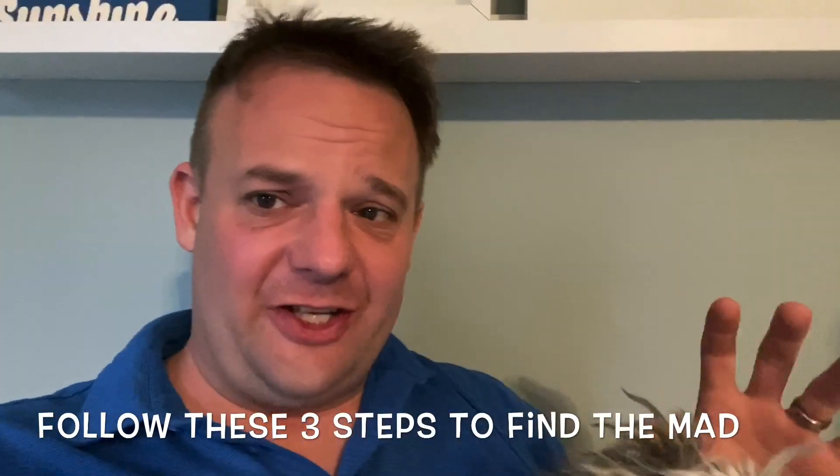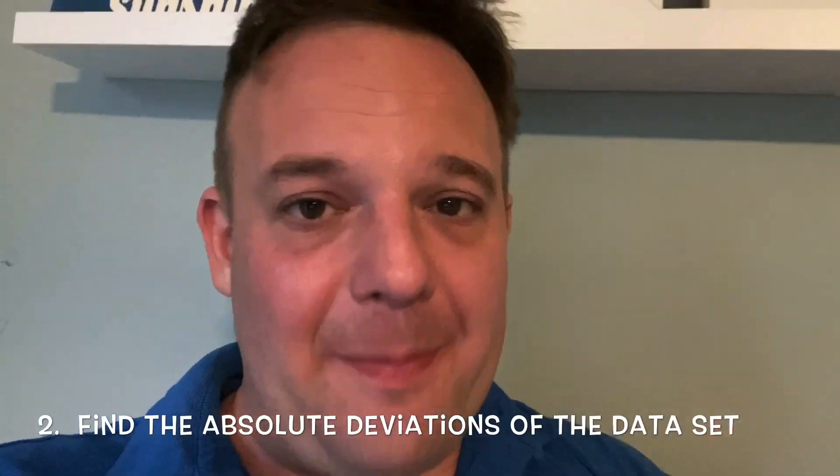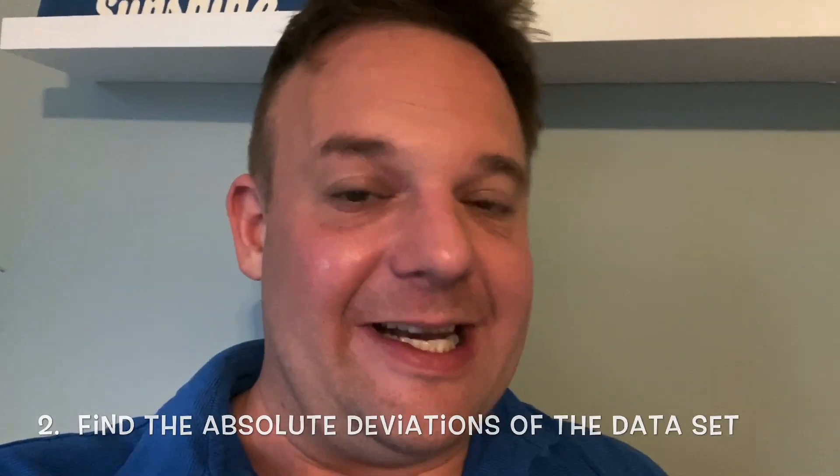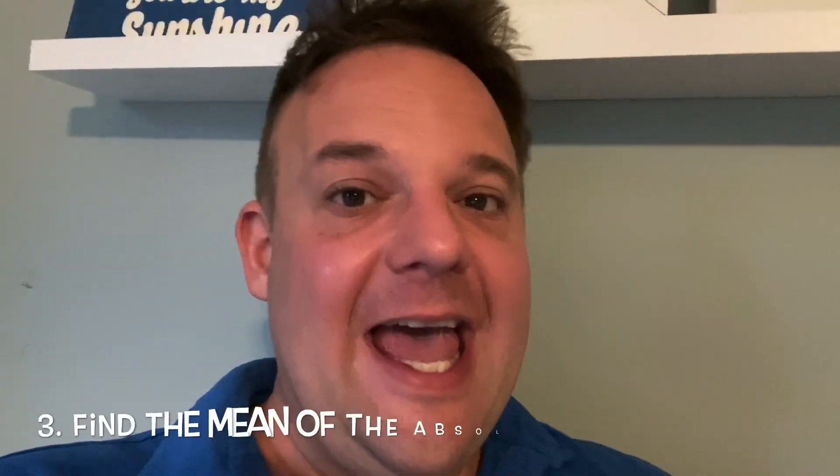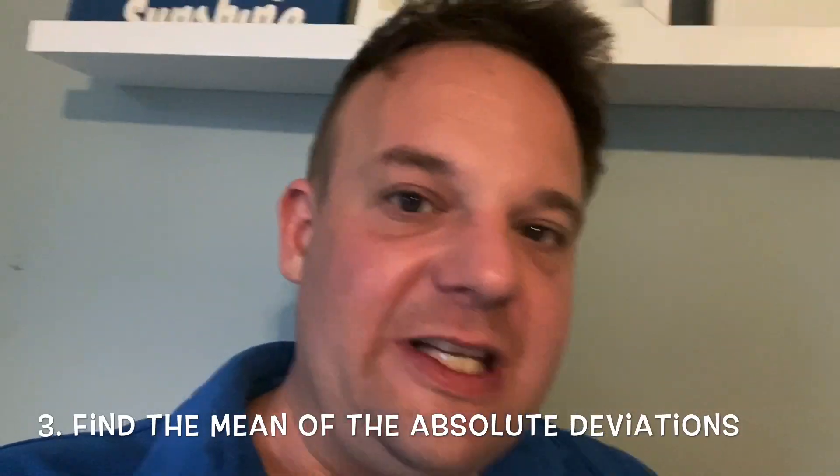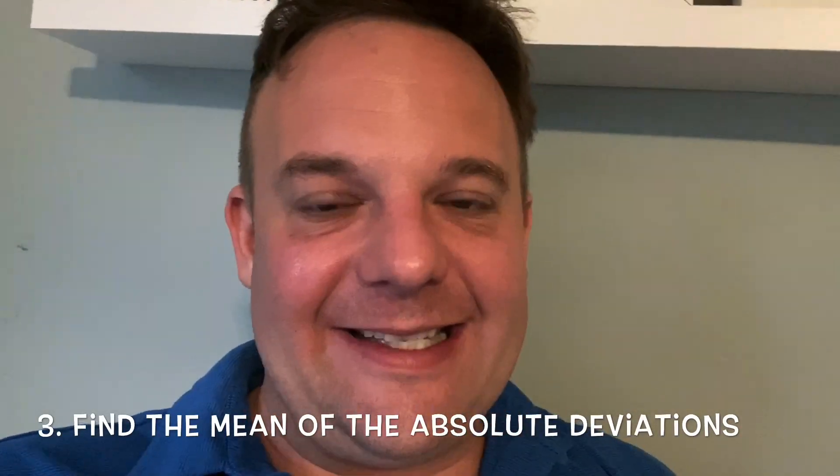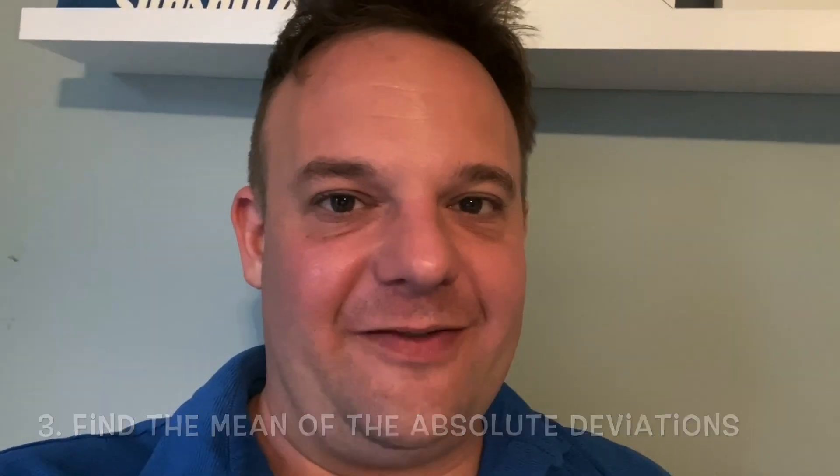In order to find the mean absolute deviation, first you have to find the mean of the data set. Once you find the mean, step two is find the absolute deviations away from the mean. Then you find the mean of those absolute deviations, and that is how you find the mean absolute deviation.